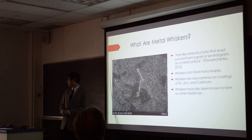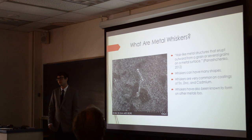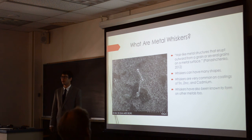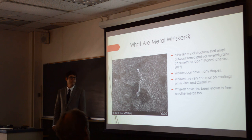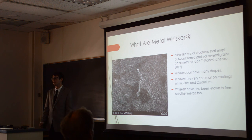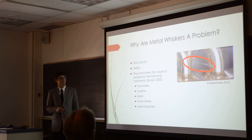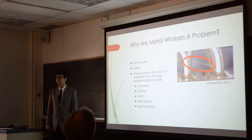Metal whiskers are hair-like metal structures that erupt outward from a grain or several grains on a metal surface. They have many shapes and sizes and are common on cadmium, tin, and lead, though they've been known to form on other metals too. Metal whiskers are a problem because they can cause short circuits, and they can also break off and cause debris inside circuitry.